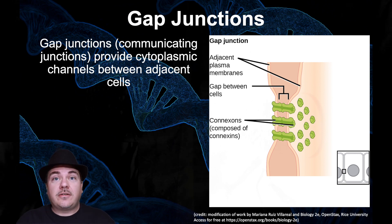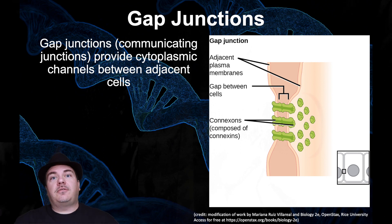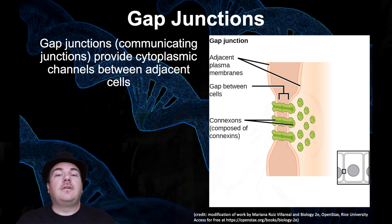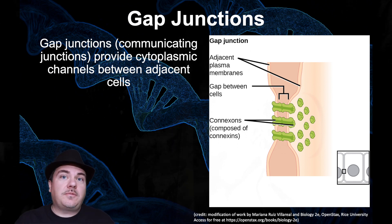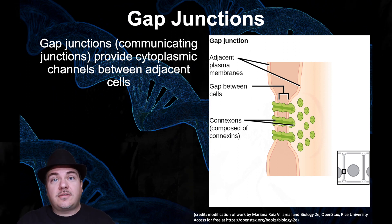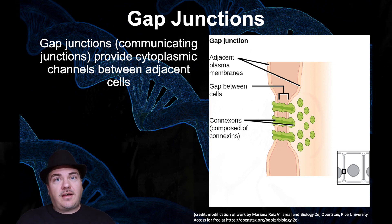Those are the extracellular components — the things that cells make that they then place outside of themselves — things like the plant cell wall, the extracellular matrix in animal cells, and the things that join cells together like tight junctions, desmosomes, and gap junctions. This concludes the series of videos where we learn the basics of the cell. Until next time, this has been Dr. Sage.